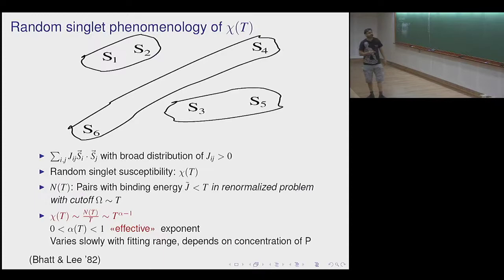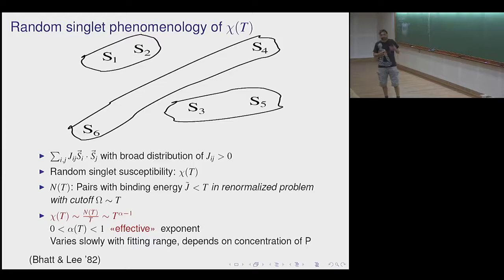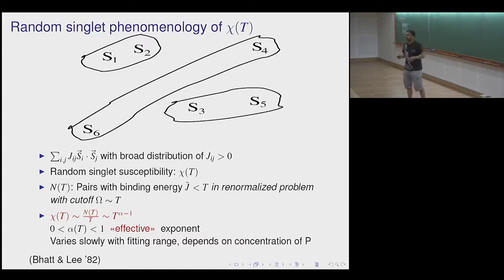At very low concentrations of phosphorus this is an insulator, but it has interesting magnetic properties. At very low energies and temperatures the physics is that of localized electrons whose charge degree of freedom is frozen and whose spin degree of freedom interacts via virtual processes. Very long ago, Bhatt and Lee developed a nice renormalization group phenomenology that explained many observations about systems like this.